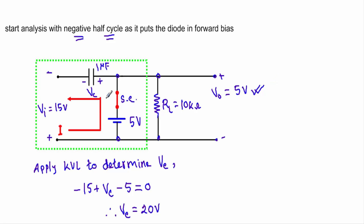After that, I have to determine the capacitor voltage Vc. The positive terminal and negative terminal drive the charging current through the diode — which is replaced by a short circuit — so a charging current flows through this path. As a result, the capacitor charges to a voltage level of Vc, and since the current enters from this direction, this side of the capacitor will be positive and this side will be negative.